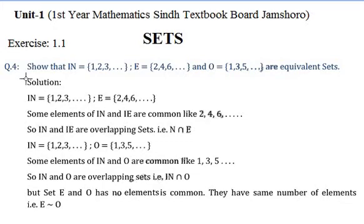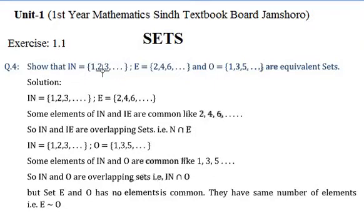Question number four, Exercise 1. The question shows: N is equal to {1, 2, 3, 4...}, the set of natural numbers; the set of even numbers {2, 4, 6...}; and the set of odd numbers.